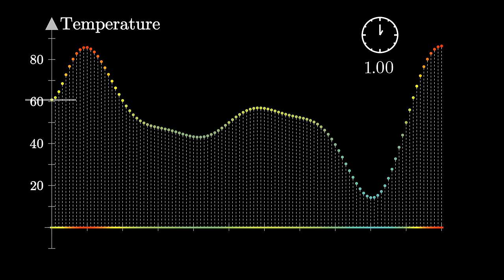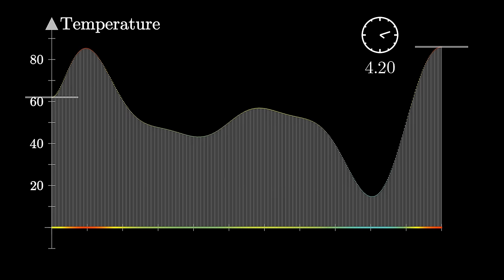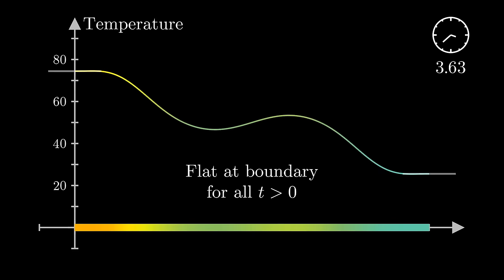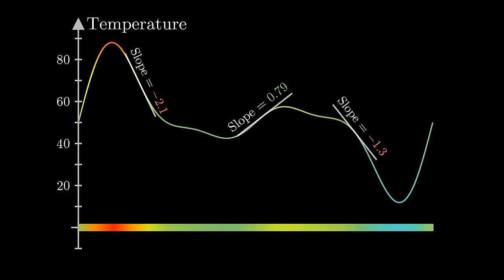As we do this for higher and higher resolutions, notice how pretty much immediately after the clock starts our distribution looks flat at either of those two boundary points. In fact, in the limiting case, as these finer and finer discretized setups approach a continuous curve, the slope of our curve at the boundary will be zero for all times after the start.